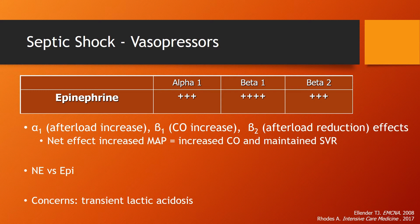Epinephrine can be added to norepinephrine to further increase mean arterial pressure in septic shock. It affects all receptors, increasing cardiac output and decreasing afterload, with the net effect of increasing MAP by increasing cardiac output and maintaining SVR. Trials comparing norepinephrine versus epinephrine, cited in the Surviving Sepsis Campaign, have shown no difference between the two. One concern is that epinephrine can cause transient lactic acidosis, likely due to a metabolic effect.